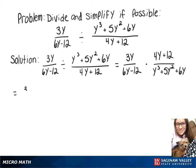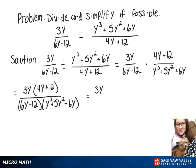And when we multiply, we'll get 3y times 4y plus 12 over 6y minus 12 times y cubed plus 5y squared plus 6y. On top, we'll still have our 3y, and then we can factor out a 4, which leaves y plus 3 in parentheses.